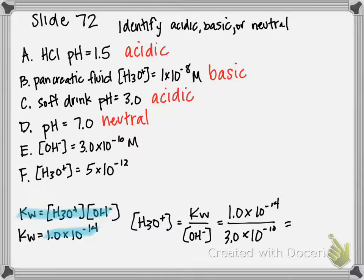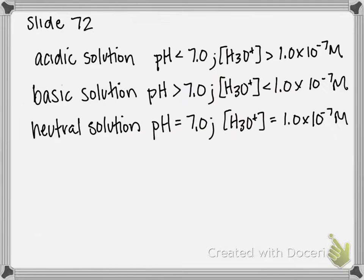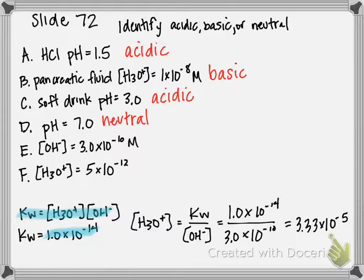If you plug that into your calculator, you get 3.33×10^-5, which happens to be greater than, if we go back, 1×10^-7. Therefore, this E is also acidic.